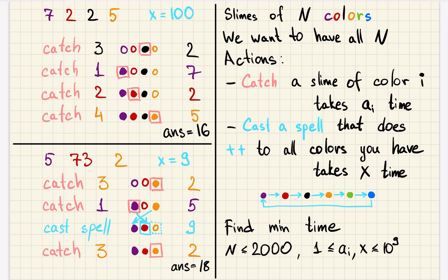N is up to 2000 and times needed to do actions are strictly positive but big. On the left you can see some examples. If the time to cast a spell is very big compared to times needed to catch a slime, it's easier to just catch all of them one by one. The order doesn't matter, so we can do it in any order.